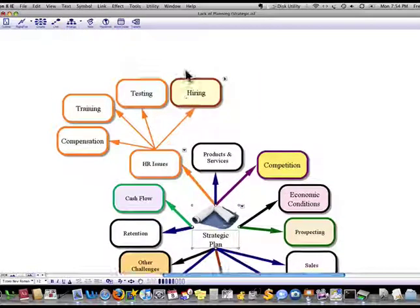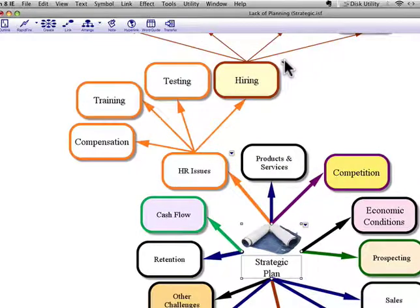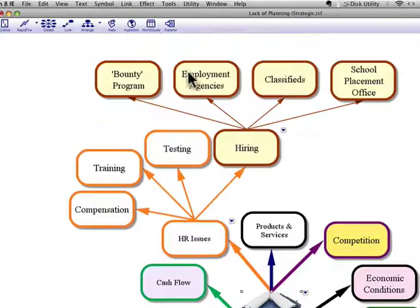There could be a Mind Map coming off just HR issues. You're going to want to talk about compensation, training, testing, hiring, and quite a few other things. Hiring alone could trigger another Mind Map. Things would include a bounty program to find good employees, using employment agencies, the classifieds, school placement office.